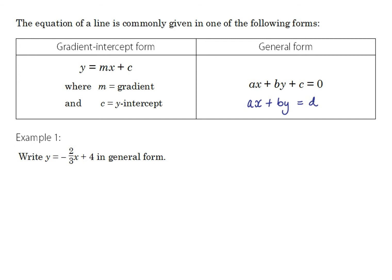Gradient-intercept form, on the other hand, immediately tells us the gradient of the line and the y-intercept. If we think about a simple linear equation like y equals 2x, we can see that every time we increase x by 1, the value of y increases by 2.